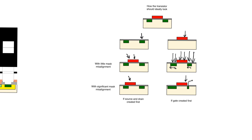So this is a self-aligned process — it is inevitable and very useful. But there's one key thing about the self-aligned process: it assumes that we will make the source and the drain after the gate.